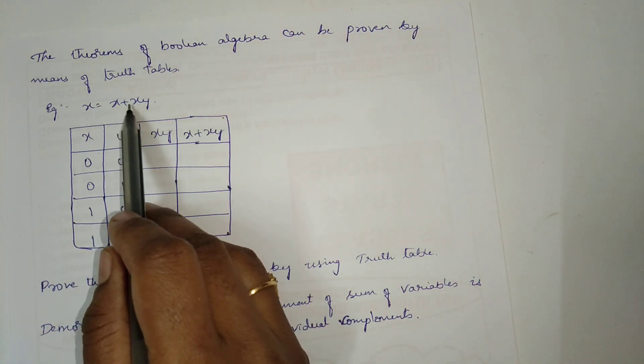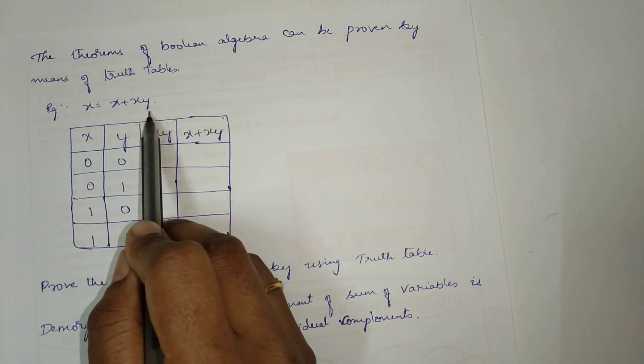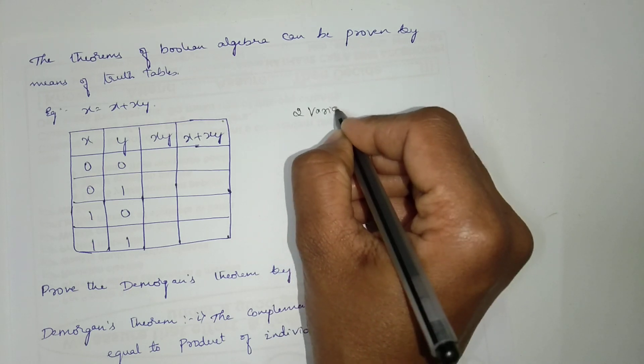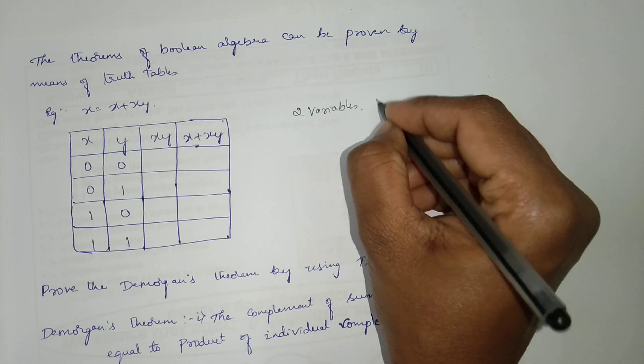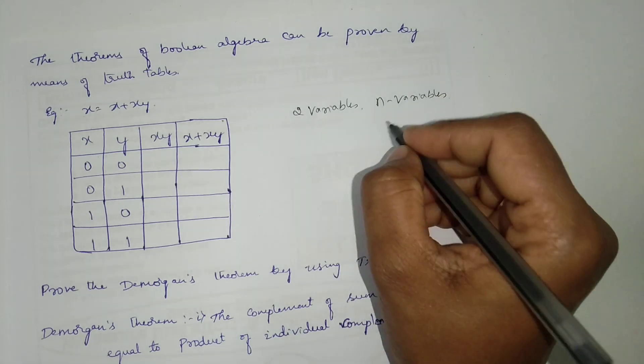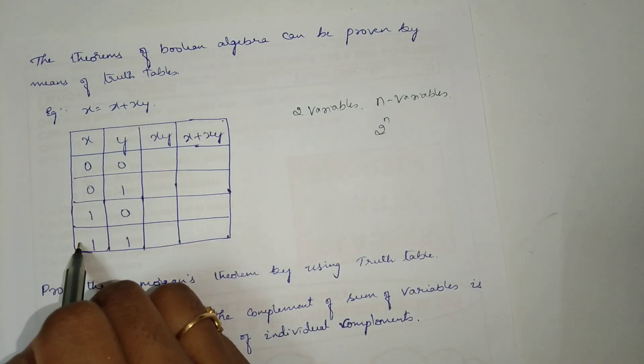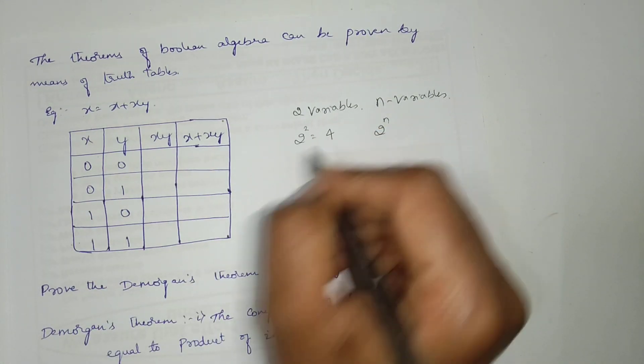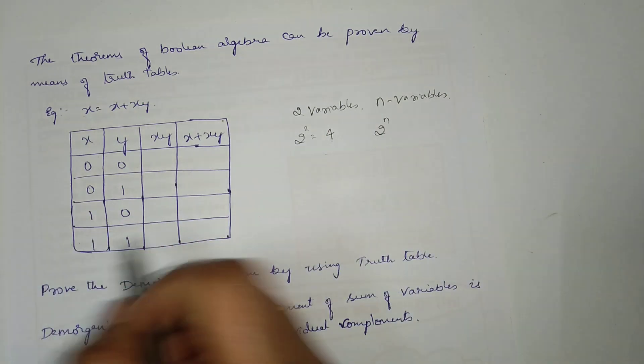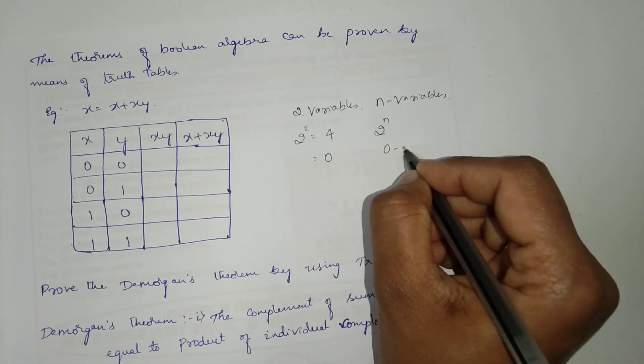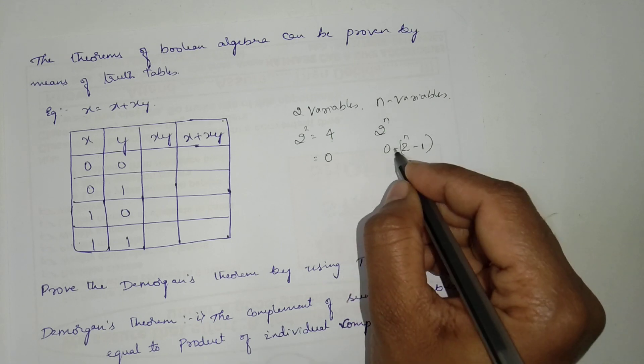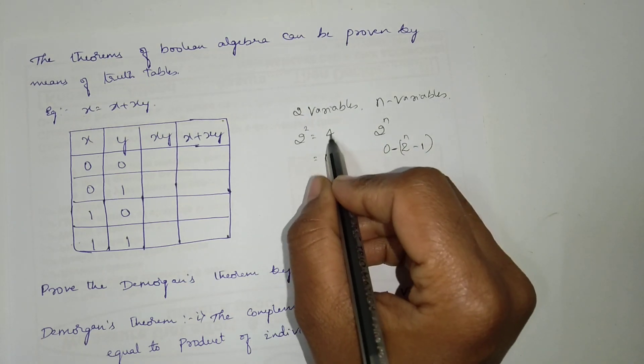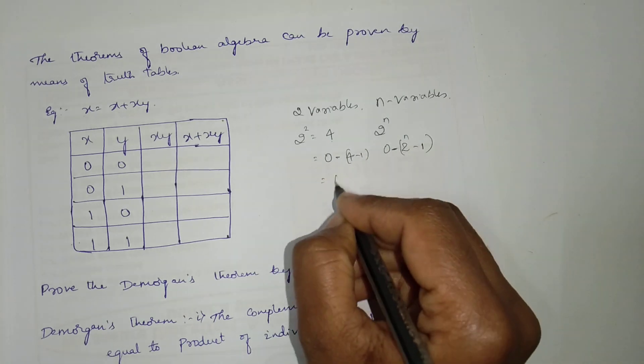First, how many variables are there? Two variables are there. If there are two variables, the number of entries we can make are two variables. If there are any n variables, I am generally writing the generalization now, we can make 2 power n entries. How many entries are here now? Four entries. So, two variables, that is 2 power 2, which is equal to four entries.